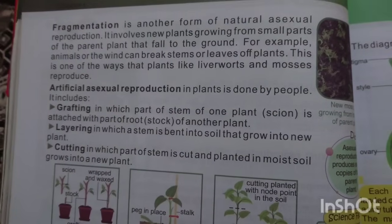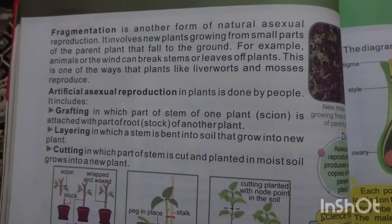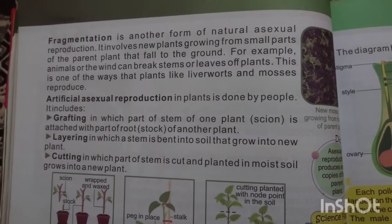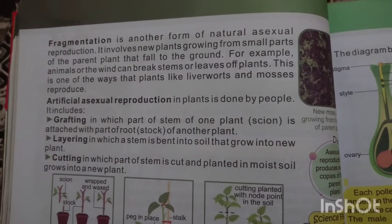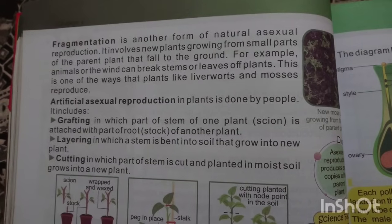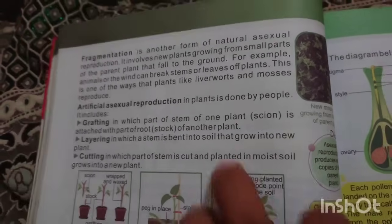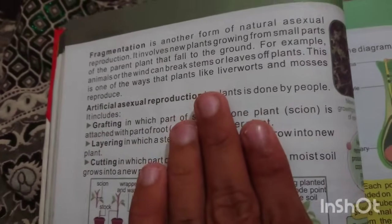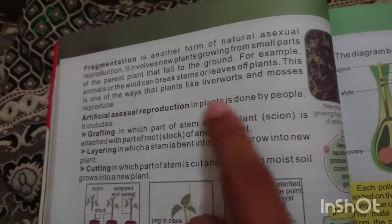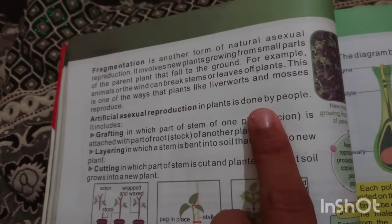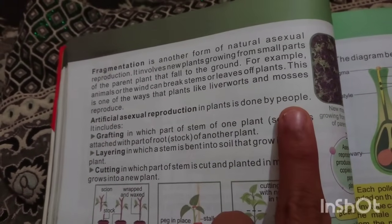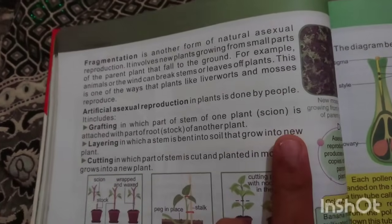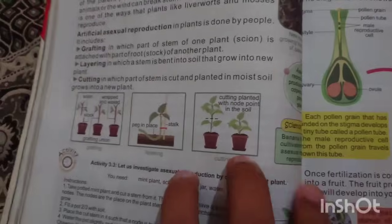Bryophyllum plants reproduce by vegetative propagation of leaf parts. Buds develop in the margins of the leaf. Fragmentation is a form of natural asexual reproduction where new plants grow from small parts of the parent plant that fall to the ground. For example, wind can break stems or leaves of plants. This is how plants like ferns and mosses reproduce.